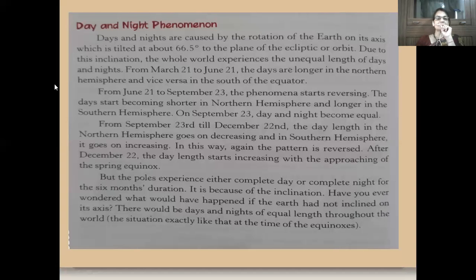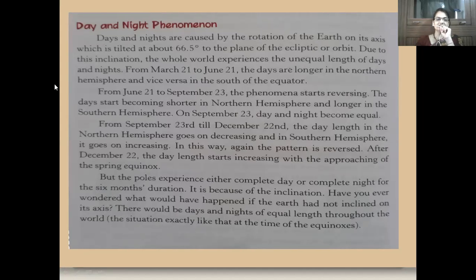From September 23rd till December 22nd, the day length in the Northern Hemisphere goes on decreasing while in the Southern Hemisphere it goes on increasing — days are becoming shorter in the north and longer in the south. After December 22nd, the day length starts increasing with the approaching of spring equinox.